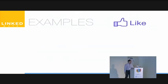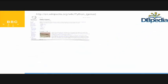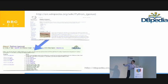Some very brief, simple examples: the Like button on Facebook actually embeds semantic web data in a format called RDFa, which we'll talk about briefly in the next slides. Or for instance, a very famous project called DBpedia, which is a transformation of the textual data from Wikipedia into a linked data format.